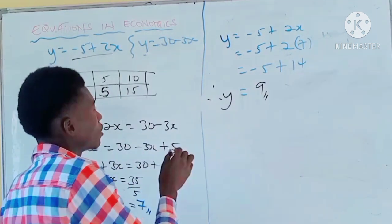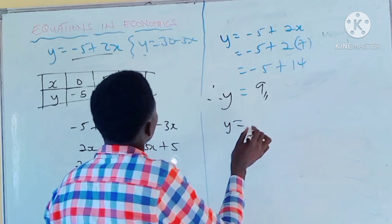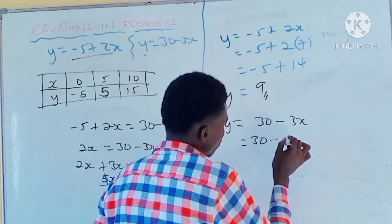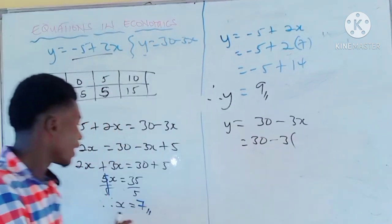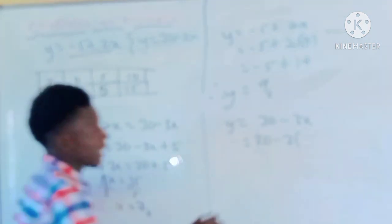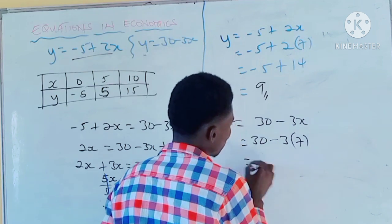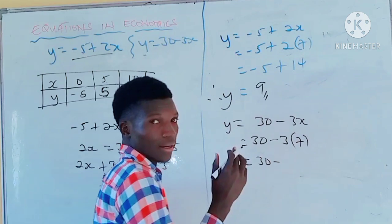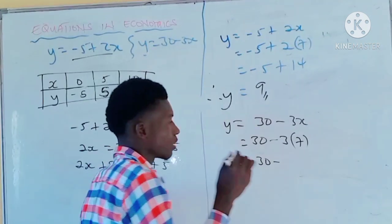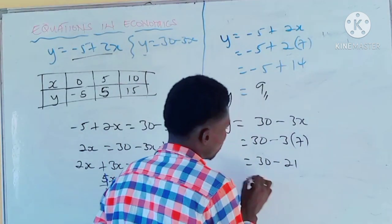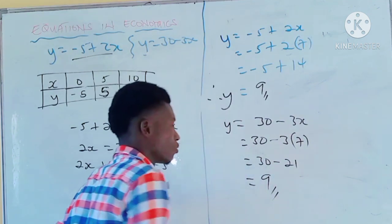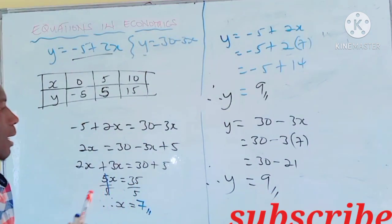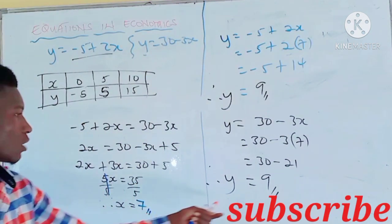Let's check with the second equation also. y equals 30 minus 3x. x is 7: 3 times 7 is 21. 30 minus 21 is 9. You still have 9. Therefore y is 9. So your x is 7 and your y is 9.